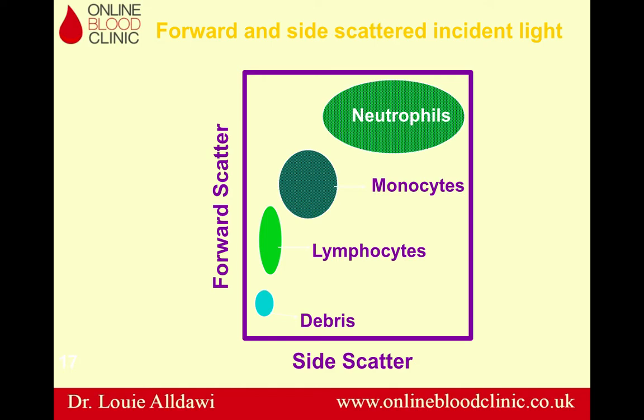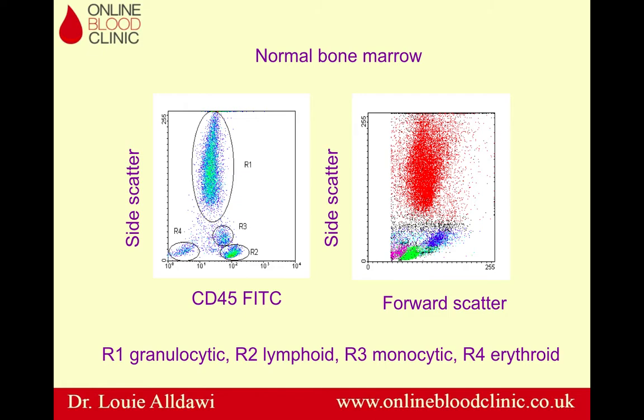Now, if we put normal blood cells into the flow cytometer, lymphocytes — which have no granules — will be low in side scatter. Neutrophils, also called granulocytes, will be high in side scatter.